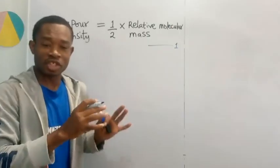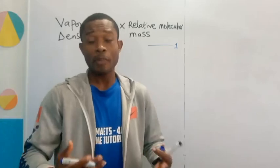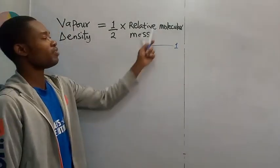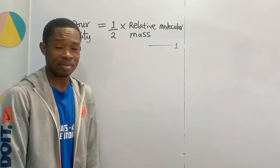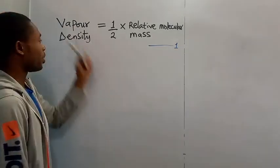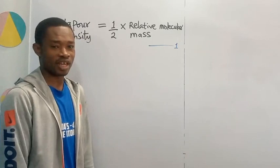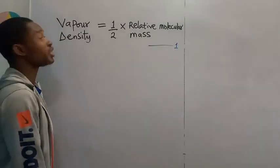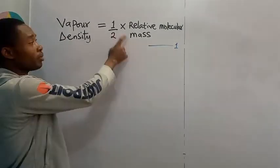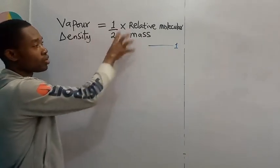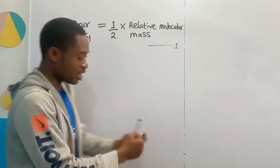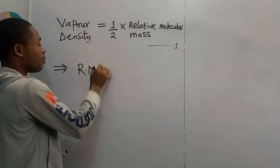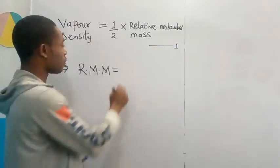Let us make this analysis on the board. Vapor density is equal to one-half times the relative molecular mass of the substance. Using this relationship we can obtain the relative molecular mass. I'll use RMM for relative molecular mass and VD for vapor density. This formula simply means that vapor density equals relative molecular mass over 2, so making RMM the subject gives us: relative molecular mass equals 2 times the vapor density.